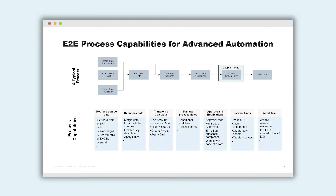The seven task types are: the ability to retrieve data from various sources; to reconcile and merge information; to transform and calculate data; to manage process flows involving approvals and notifications; to post data back into a system; and to keep an audit trail of it all.